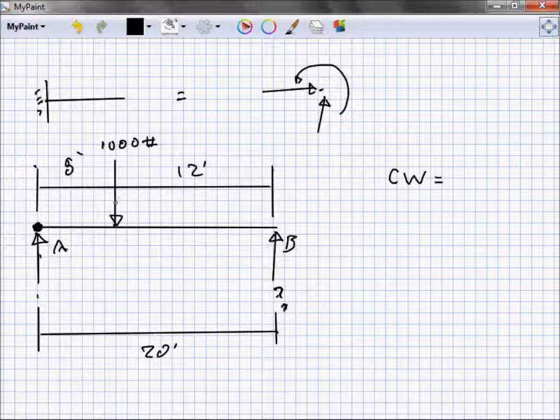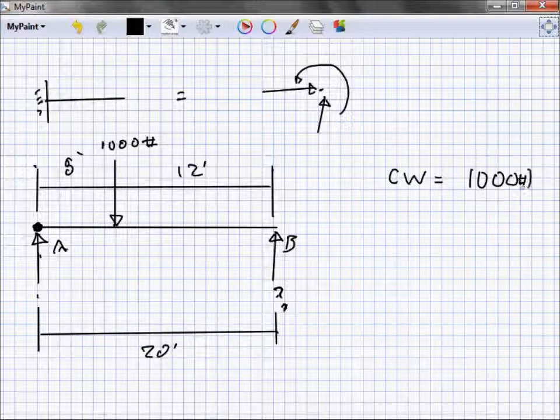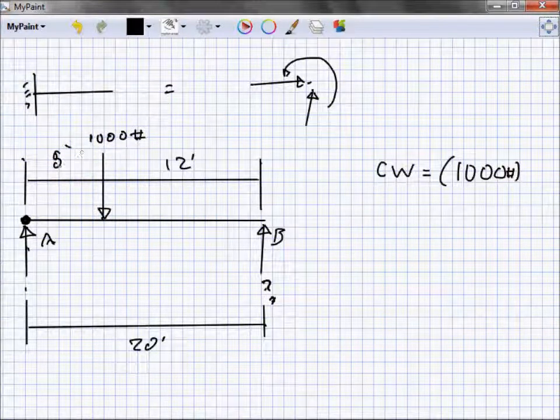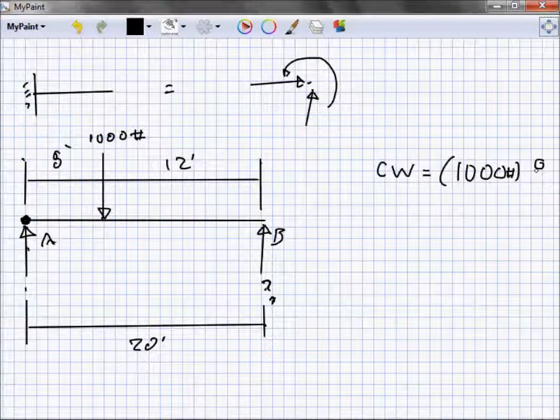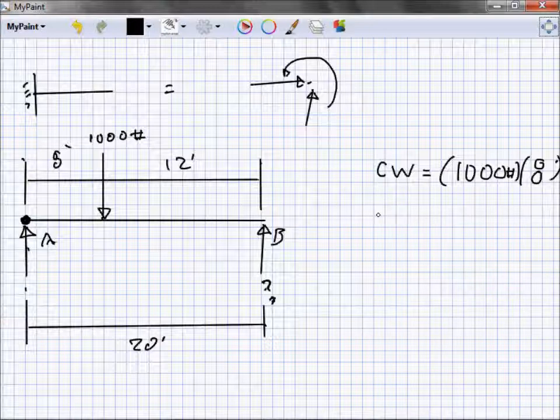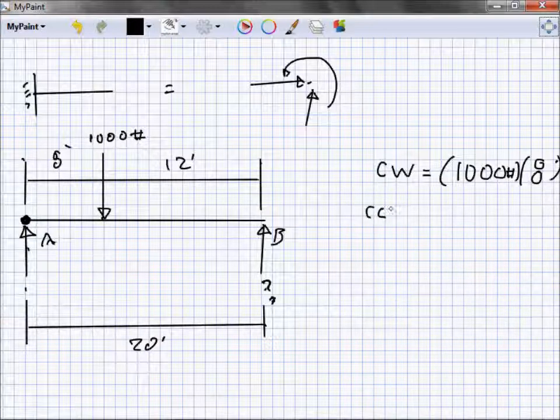The 1,000 pounds - this thing wants to push that beam down and make it go like that, clockwise. So I've got 1,000 pounds, and that's how far from that pin? 8 feet. 1,000 pounds times 8 feet. Anything else want to make it go clockwise? I don't think so.